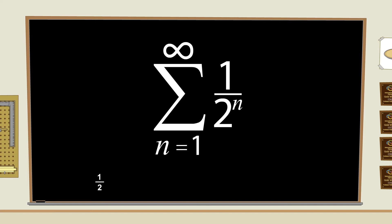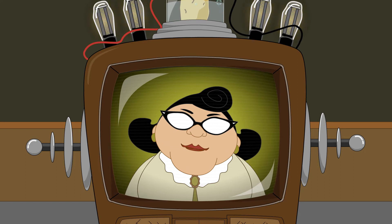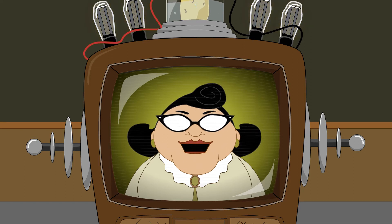The second term is 1 over 2 squared, or 1 fourth. The third term is 1 over 2 cubed, or 1 eighth, and so on. Let's draw a picture of what happens when we add the terms in this series.